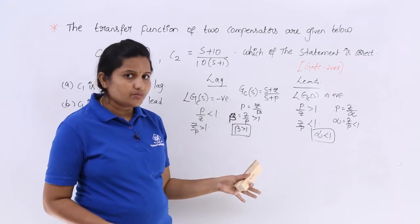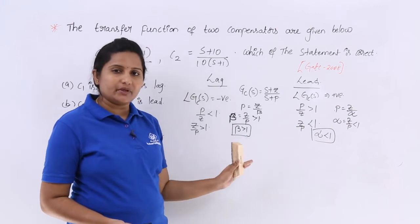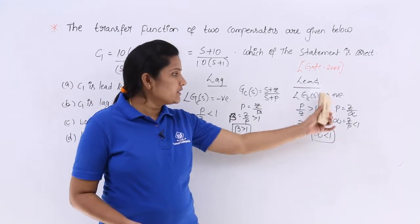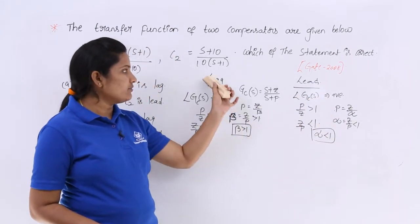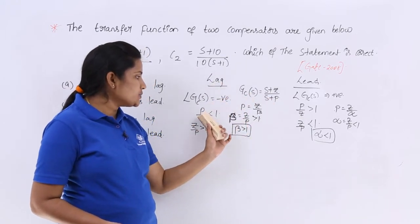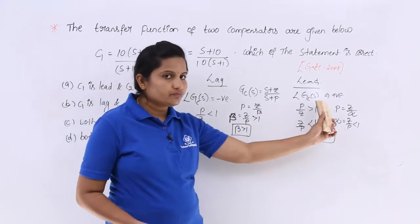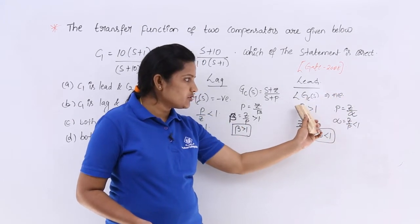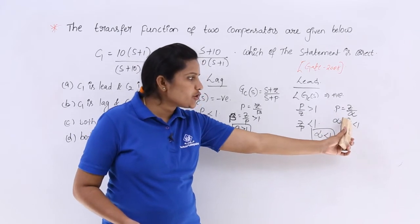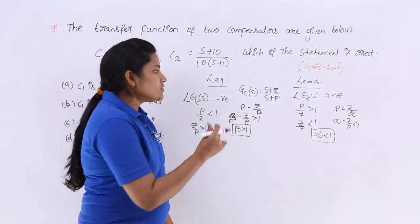In a previous GATE problem on compensators, I mentioned alpha less than 1 for lead compensator and beta greater than 1 for lag compensator. The reason: lagging phase is negative, negative indicates P/Z < 1, implying Z/P > 1. For lead, phase is positive, so P/Z > 1 and Z/P < 1. Since alpha = Z/P, alpha < 1 for lead compensator.